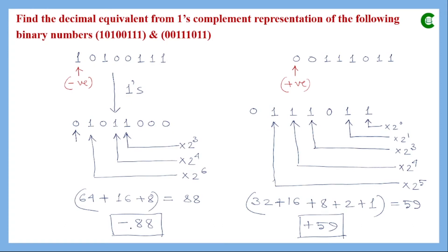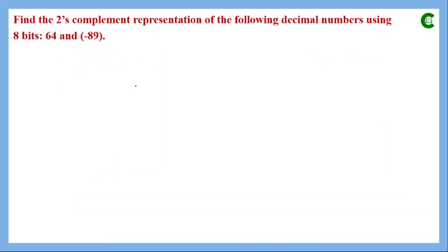To verify this result, we confirm by representing minus 88 in 1's complement form: start with plus 88 in binary, write its 8-bit sign-magnitude form with MSB = 0, then take the 1's complement. This matches the original given number, confirming the decimal equivalent minus 88 is correct.